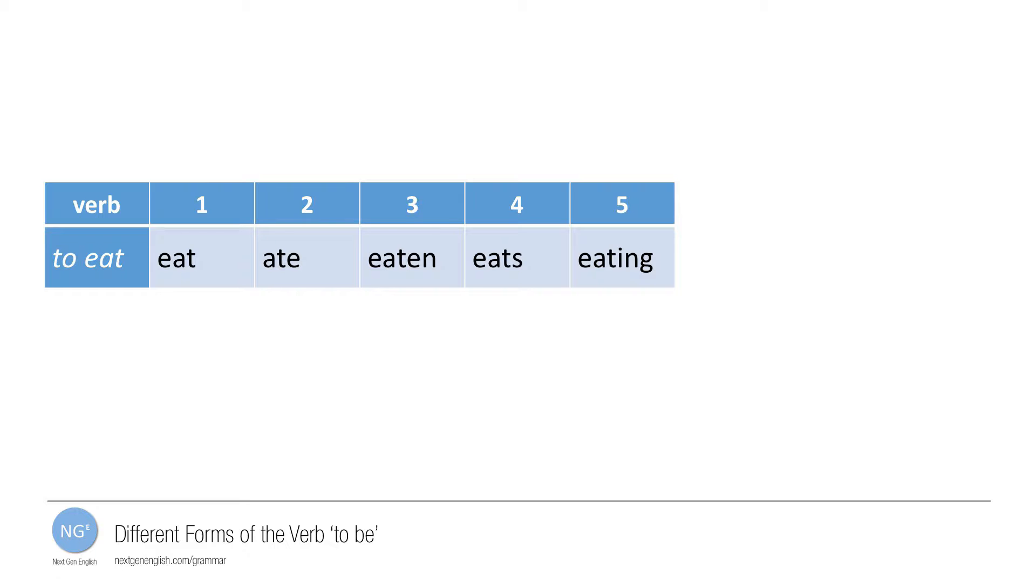Most verbs, regular or irregular, have five forms like the verb to eat. Of all the verbs in English, the verb to be has the most forms. While most have five, to be actually has eight.